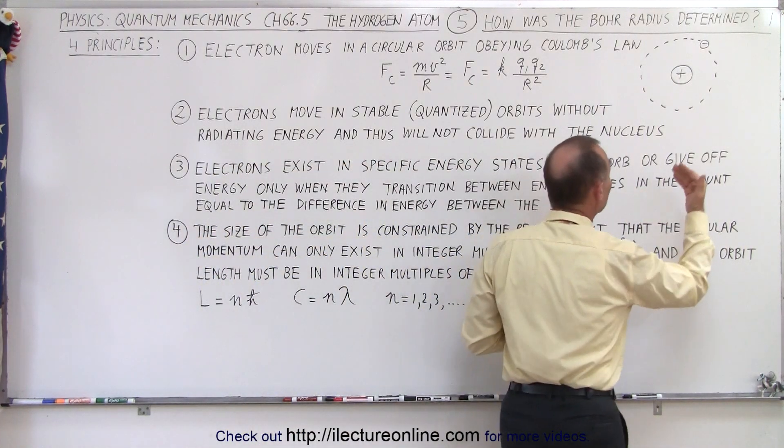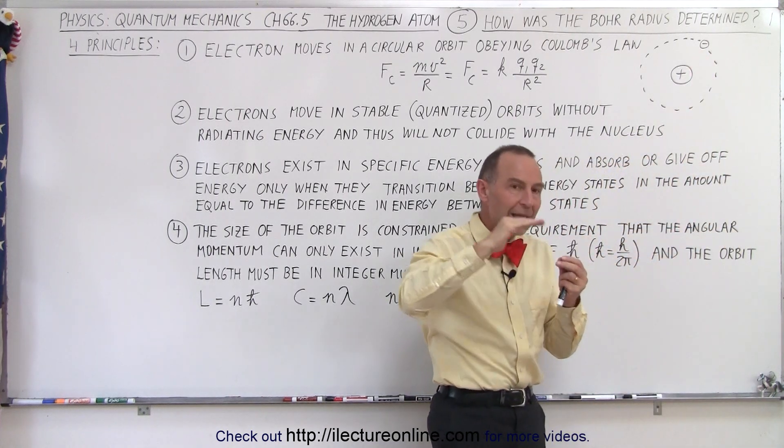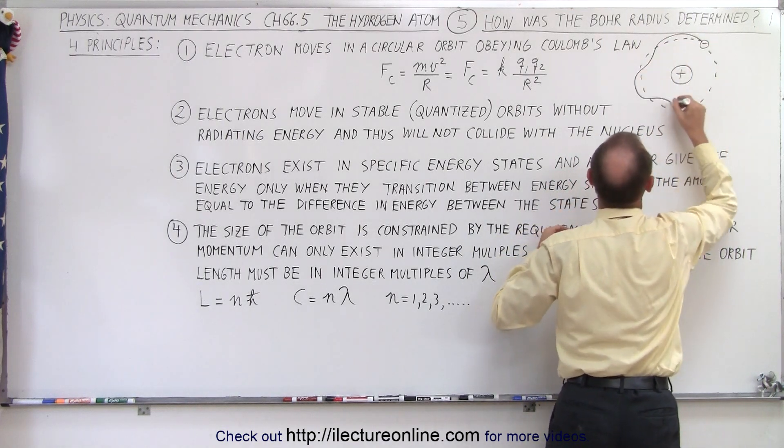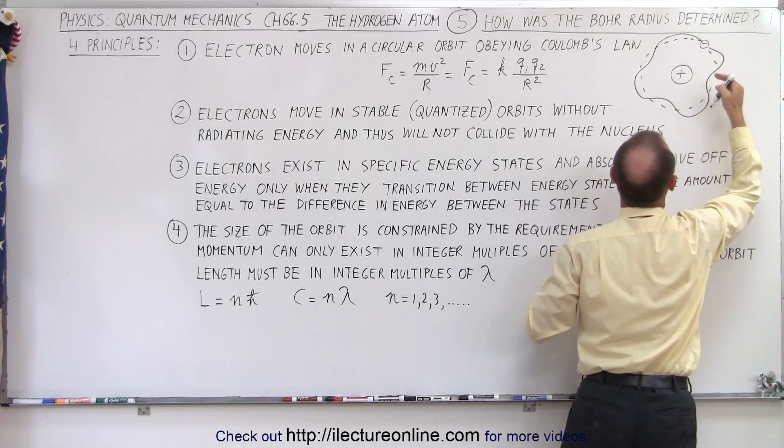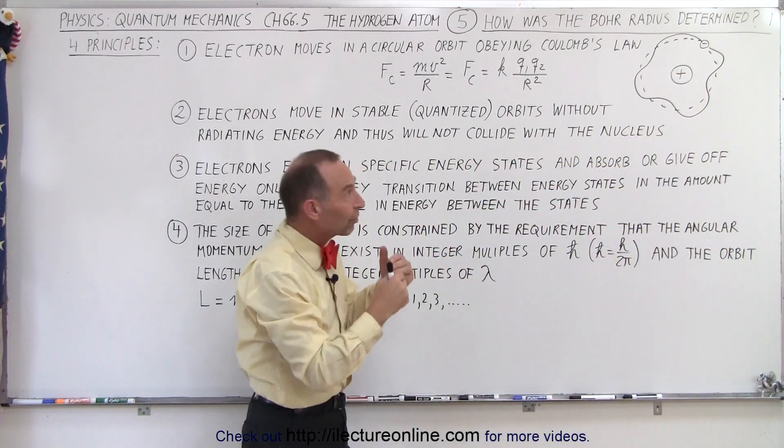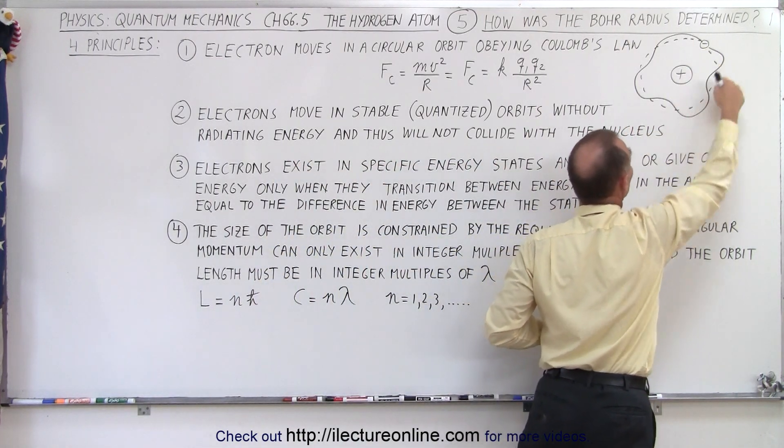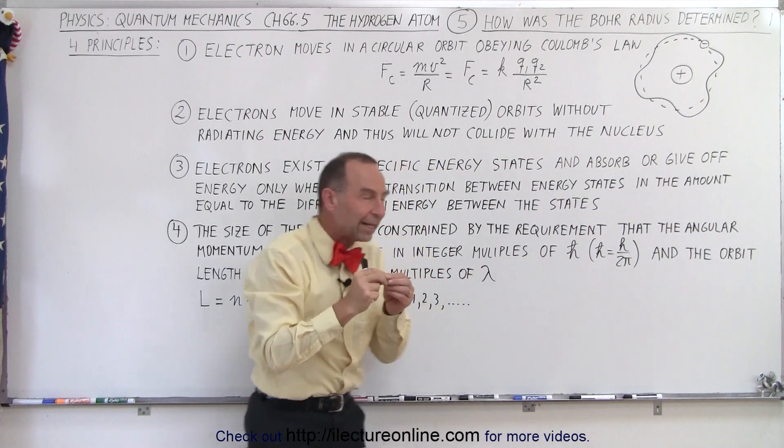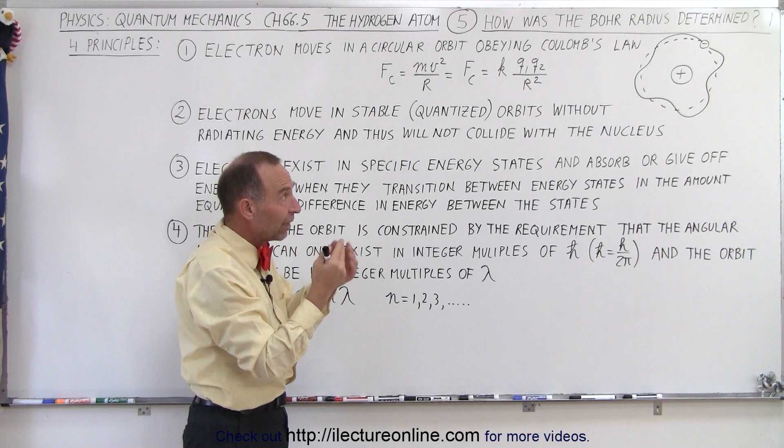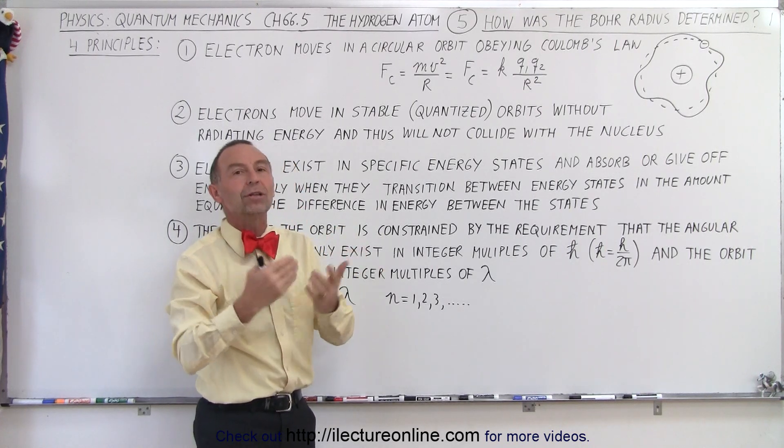In other words, since we now knew that electrons, small particles like electrons, behaved like waves, we can think of the electron going around the orbit like a wave particle. As it goes around the nucleus, it can only do so if there was constructive interference as the electron came back to the same position as before, which can only happen if it traveled an integer number of wavelengths. If it didn't travel an integer number of wavelengths, then the electron would essentially interfere with itself and couldn't exist that way.